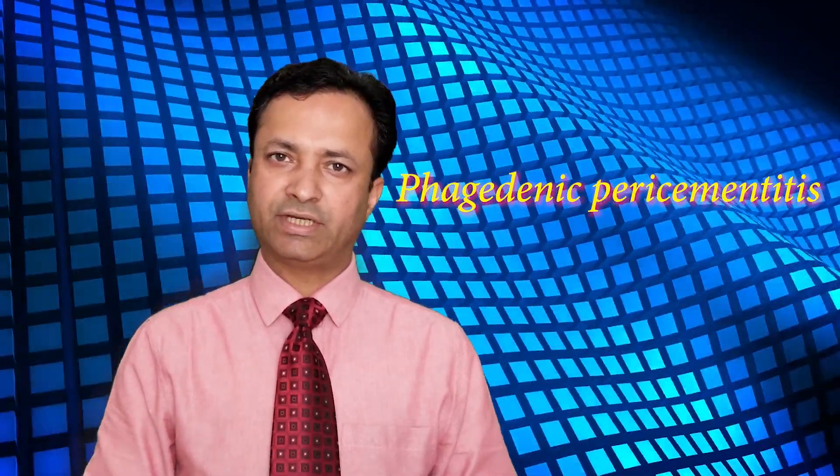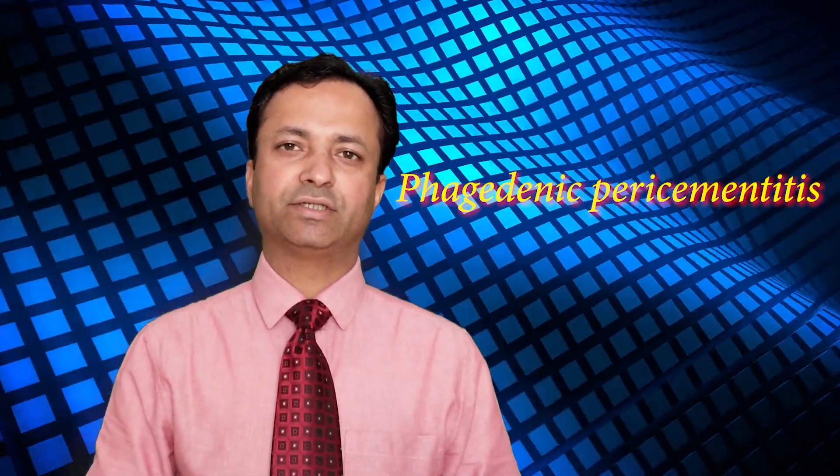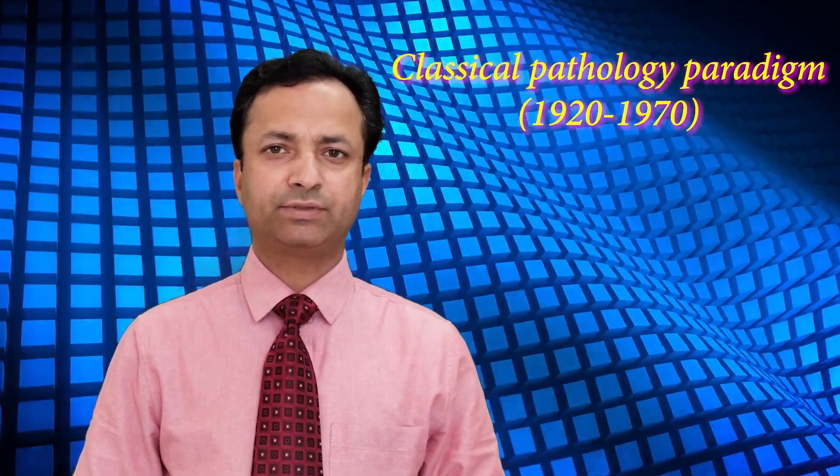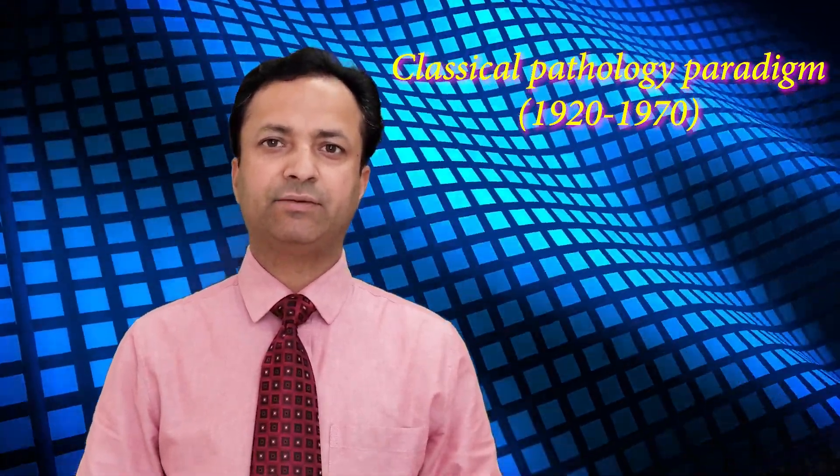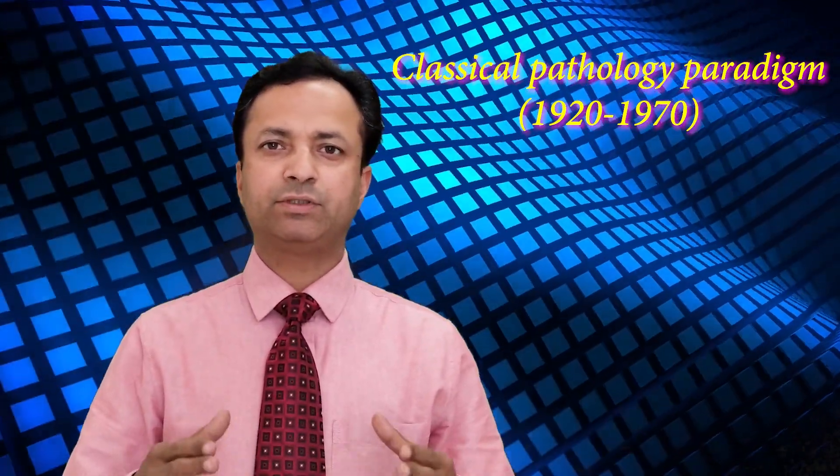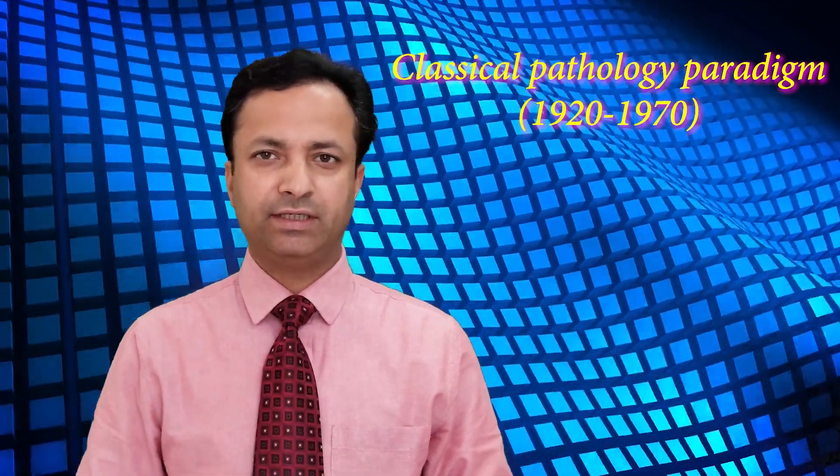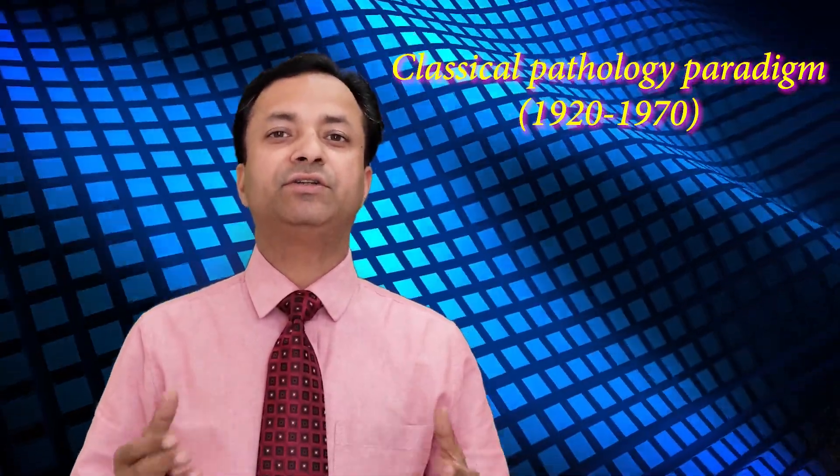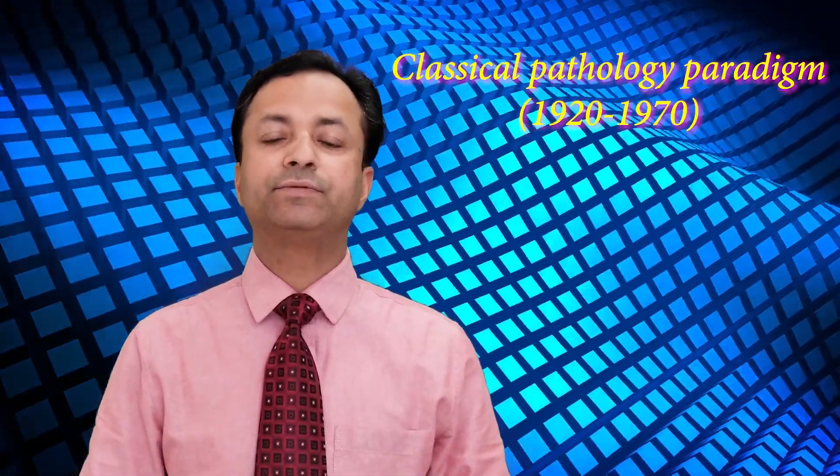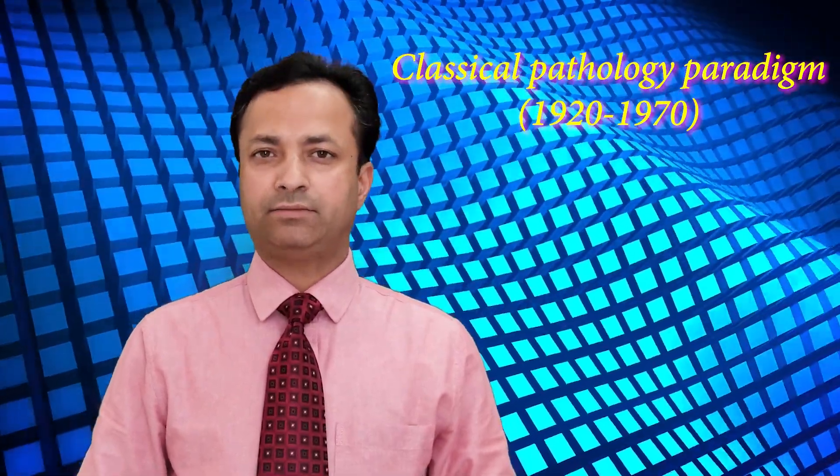Now coming on to the classical pathology paradigm, the classification systems given during this duration of time were based on the principles of general pathology. If you go through these classification systems you will see that terms like atrophy, dystrophy or regeneration have been extensively used. The two main researchers who dominated this duration of time were Dr. Orban and Dr. Gottlieb.